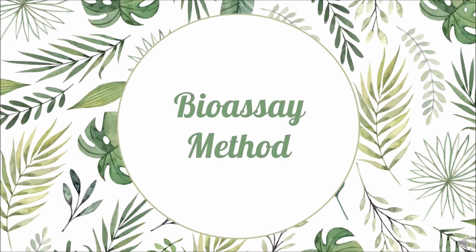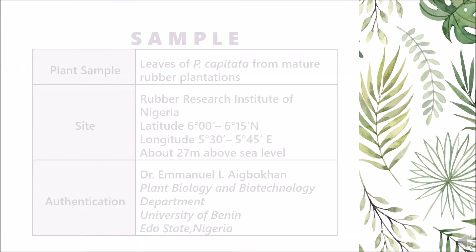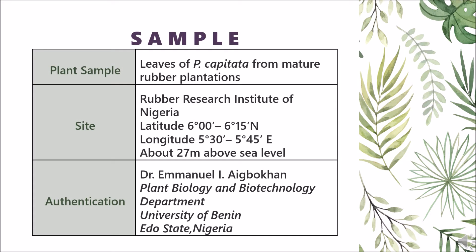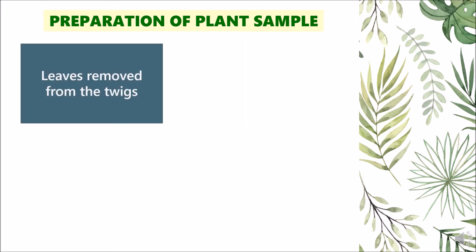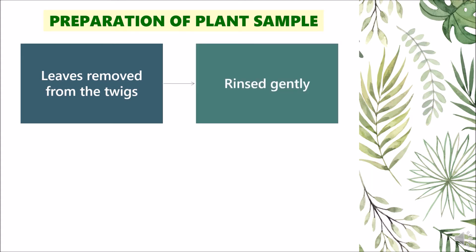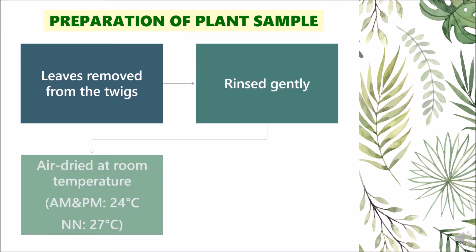Moving on to the bioassay method, starting with the sample. The plant sample used in the study were leaves of authenticated P. capitata, a mistletoe growing from mature rubber plantations at the Rubber Research Institute of Nigeria. Leaves were removed from the twigs, rinsed gently to remove dust and dirt, air dried at room temperature in a well-aerated atmosphere, and prevented from direct sunlight to avoid denaturation of phytoconstituents.